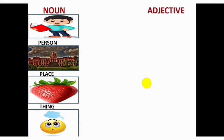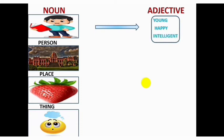For example, here you see a person's picture. To describe the picture, what are the things or qualities you think about the person? You can say he is a young person or he is a happy person or he is an intelligent person. So, these words are described about this person.